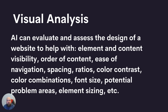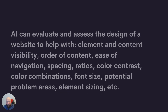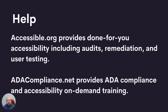That covers all of these different practical ways AI can help — and this is by no means exhaustive. These were some of the things at the top of my head and the many ways I've already used AI to help with accessibility. If you need help with accessibility right now, accessible.org provides done-for-you accessibility services, including audits, remediation, and user testing. And ADAcompliance.net provides ADA compliance and accessibility training on demand.